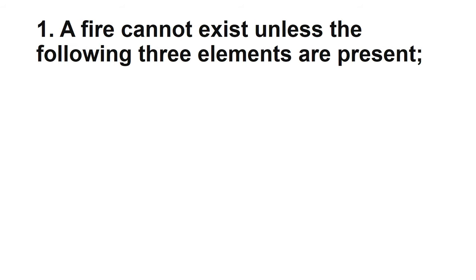A fire cannot exist unless the following four elements are present: fuel, heat, and oxygen. If there is no fuel, there is heat and oxygen — fire cannot take place. But if there is fuel and heat but no oxygen, fire also cannot take place. The fire is taken place by a chemical chain reaction between the three elements: fuel, heat, and oxygen.